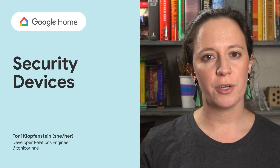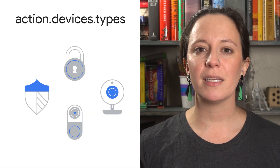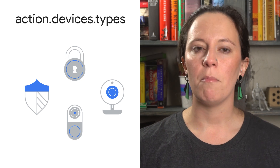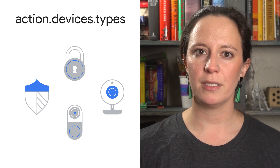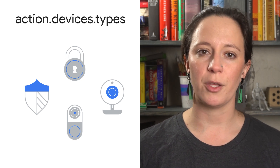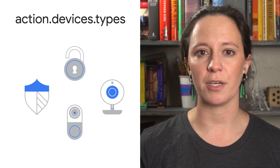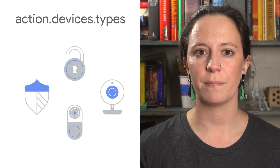If you're developing a security device for Smart Home, there are some important features you'll need to make sure to implement. Let's take a closer look. Devices that can secure structural access, monitor surroundings, or notify users about nearby events typically fall under the security device category.